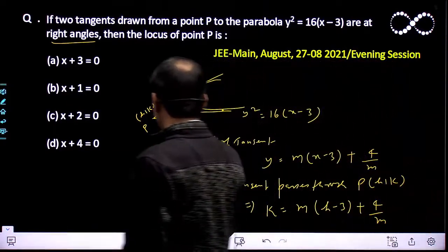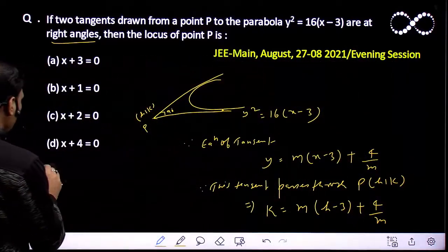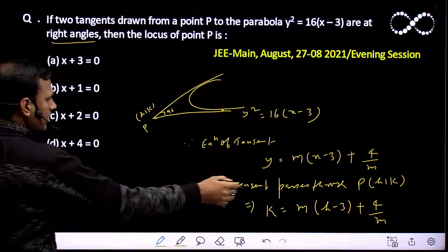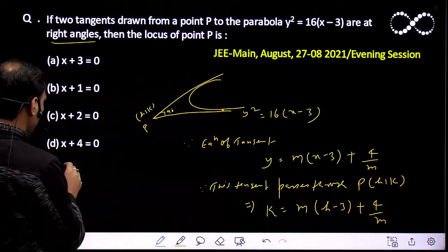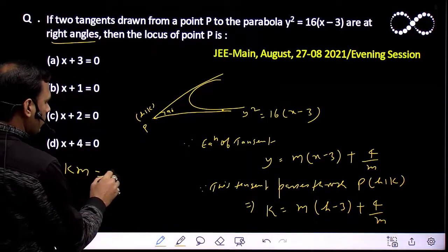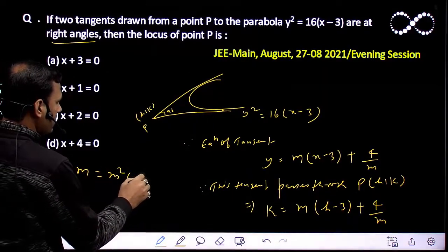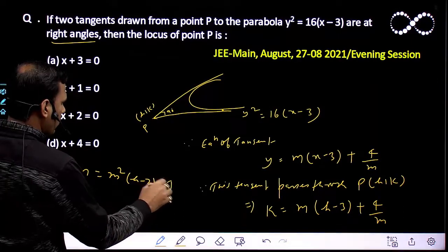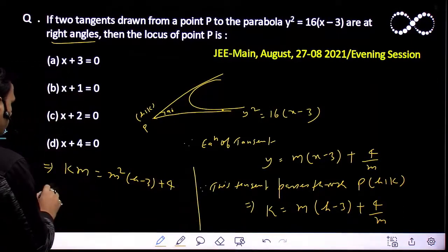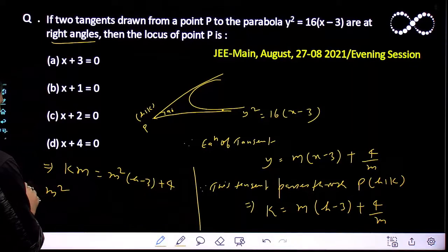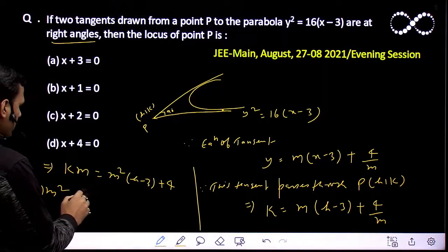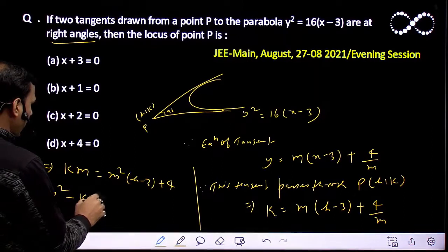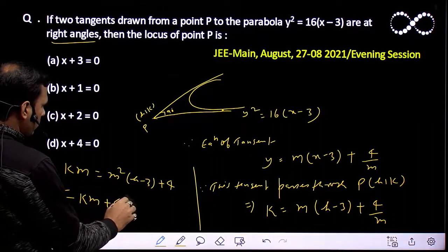What does this mean? Cross-multiplying and making the equation: km = m²(h - 3) + 4. So m²(h - 3) - km + 4 = 0.